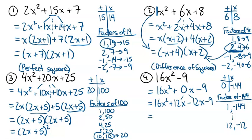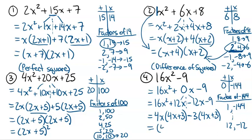Now we factor by grouping. From the first two terms — 16 and 12 — we can divide out a 4 and also take out an x, leaving 4x + 3. From the last two terms, I'll common factor a negative 3: that gives 4x + 3 as well, because negative 3 times positive 3 gives back the negative 9. So we're left with (4x − 3)(4x + 3). You can see it's a difference of squares because 16 and 9 are both perfect squares and there's a minus sign. In a later video I'll show you the shortcut for difference of squares, but this method works just as well.